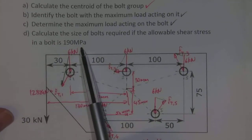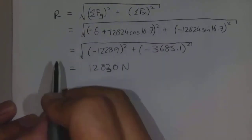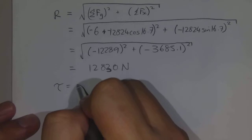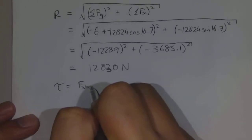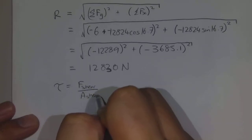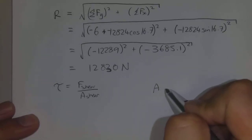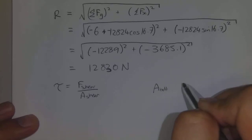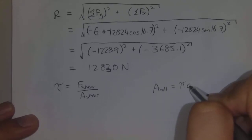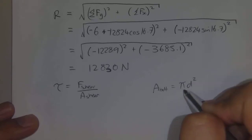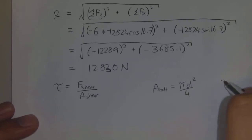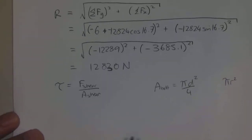The relationship we'll use here is that the shear stress is equal to the shear force divided by the area in shear. Now if we're trying to find out the diameter of a particular bolt, there's a relationship between the area of a bolt and its diameter: that is pi d squared divided by 4. You might have used pi r squared — both of these are equivalent equations.